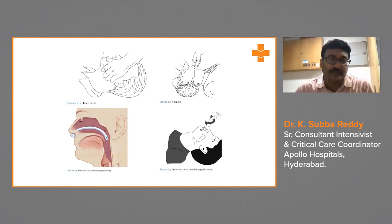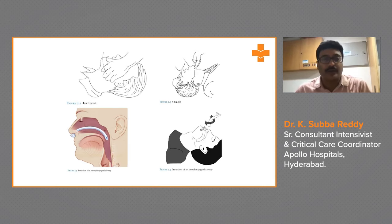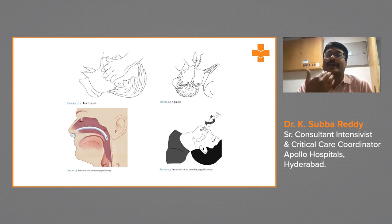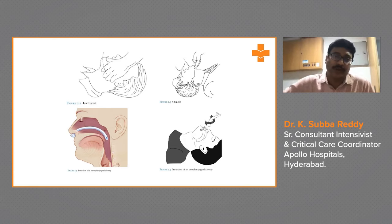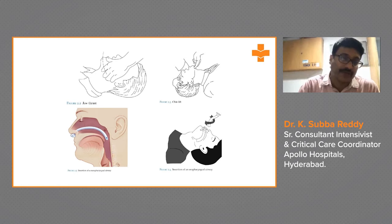You can give jaw thrust, you can do chin lift when the patient is unconscious, and you can do head tilt, jaw thrust, and chin lift — this is called the triple maneuver — to maintain oxygenation or to maintain the airway if somebody is unconscious. However, if the patient has a cervical spine injury, you cannot do head tilt and you have to be very careful when giving jaw thrust also.